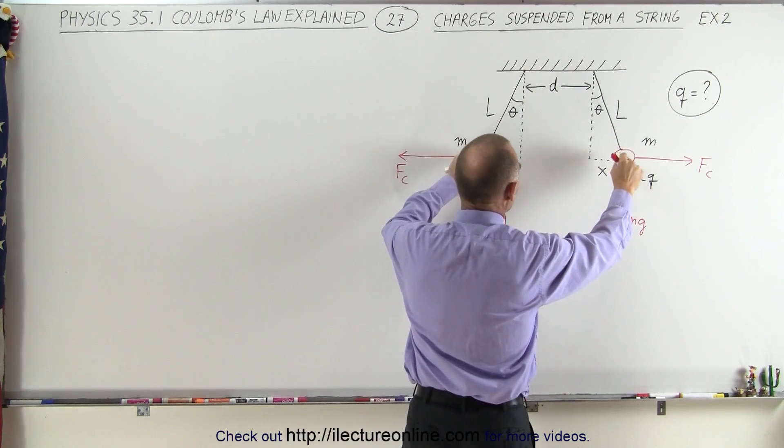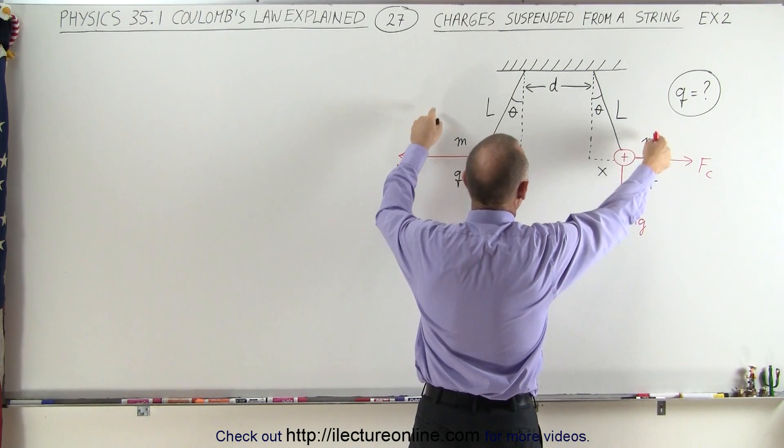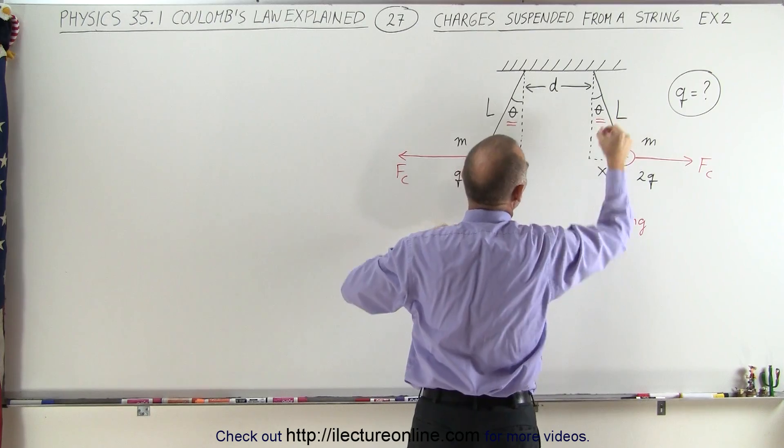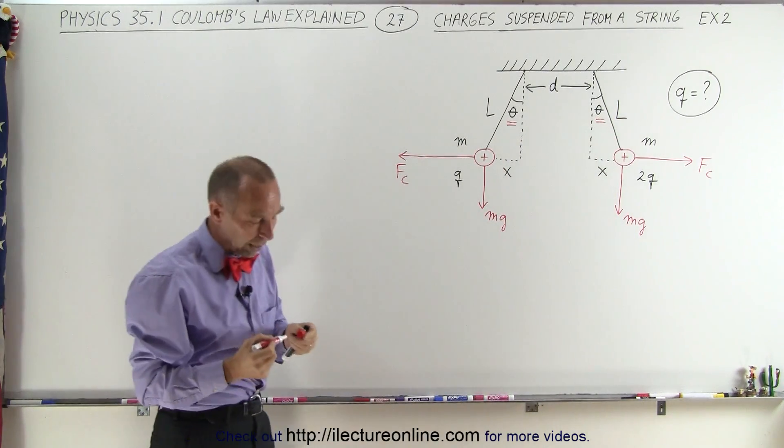The force of repulsion is equal on both masses, and since they have the same mass, they will have the same amount of deflection so that these two angles are equal as well.